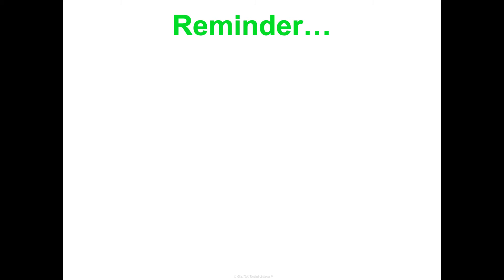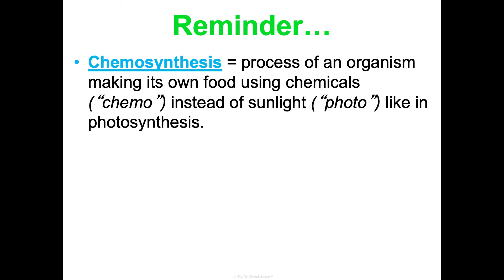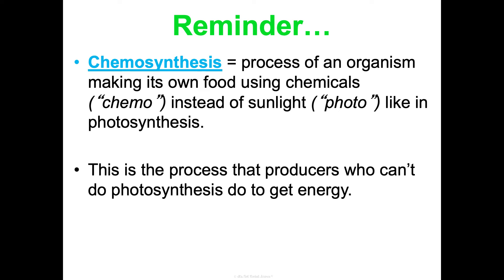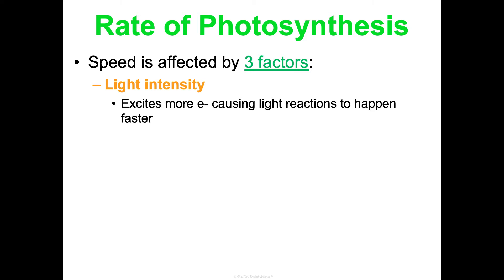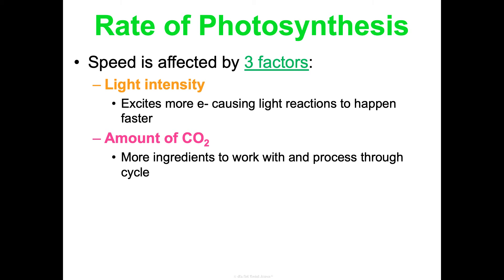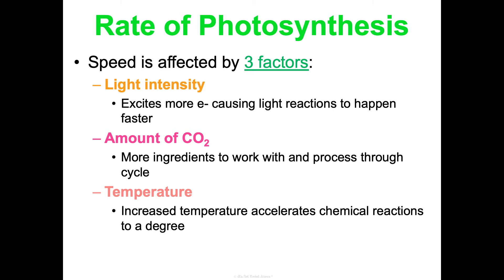Not every producer does photosynthesis — a small amount do chemosynthesis, where they make their own food from chemicals instead of sunlight; we talked about this in Concept 3. How quickly photosynthesis happens is affected by a few things. Higher light intensity means more electrons can be excited, causing the light reactions to happen faster. More CO2 means more ingredients to process through the cycle. And increased temperature generally accelerates the chemical reactions because of the kinetic molecular theory — higher temperature means higher kinetic energy, so particles move faster and collide more.